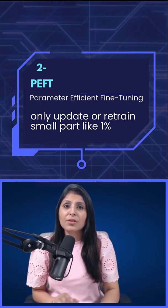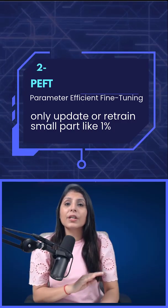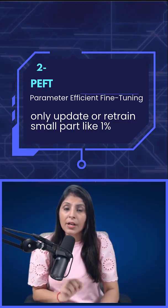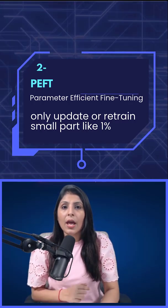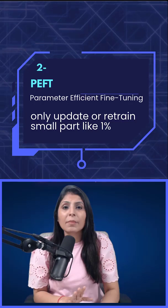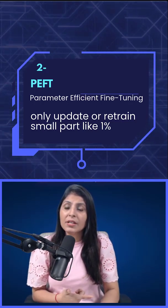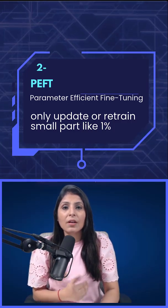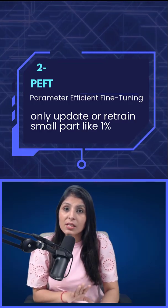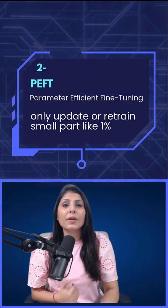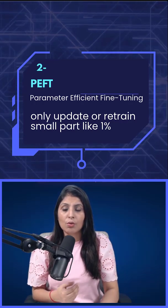PEFT changes this old approach. Instead of retraining all the model's parameters, it only updates or retrains a small part — like one percent — and freezes all the remaining 99% of the parameters. Because only one percent of parameters are updated, retraining becomes much faster and cheaper. And because 99% of the parameters stay the same, the model also keeps its original knowledge.